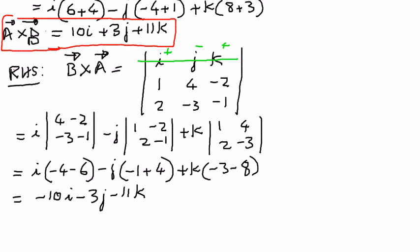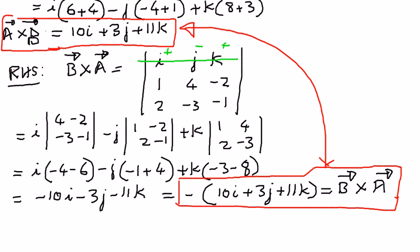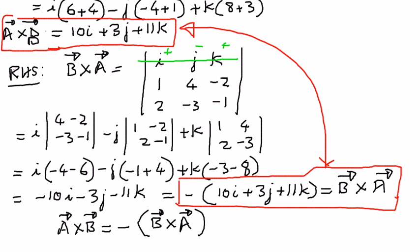We can write this as negative of 10i plus 3j plus 11k. This is the cross product for vector b cross vector a. I'm going to put a block around this. When you look at these two results, this is the property which we have just proved. Therefore, vector a cross vector b is exactly equal to the negative of vector b cross vector a. We have used determinants to prove this, and the determinants give us an easier way to solve these types of problems. In my next presentation, we shall look at some more examples related to cross products and vectors in three dimensions.